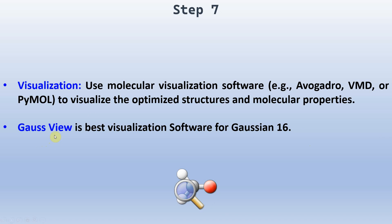Step 7: Visualization. Use molecular visualization software such as Avogadro, VMD, or PyMol to visualize the optimized structure and molecular properties. GaussView is the best visualization software from Gaussian Inc.